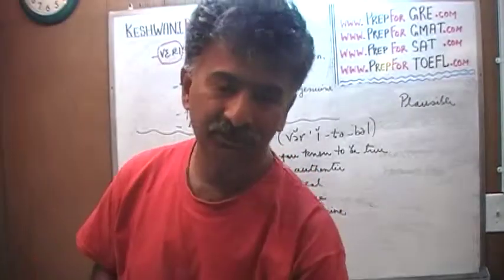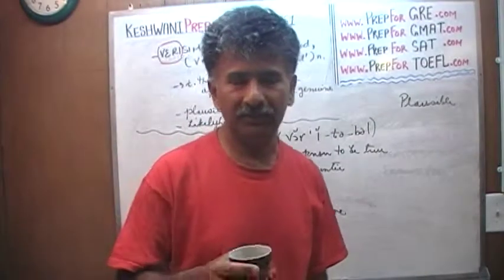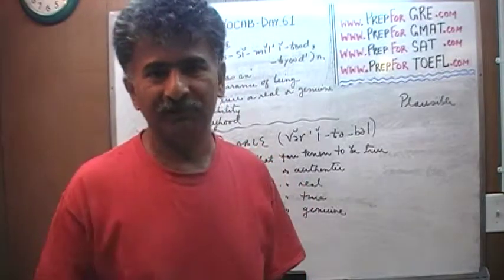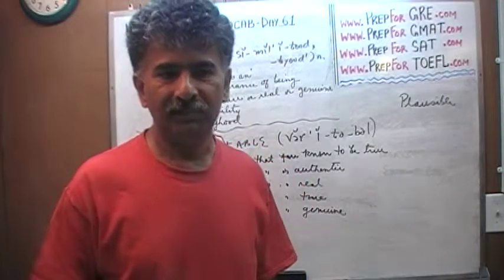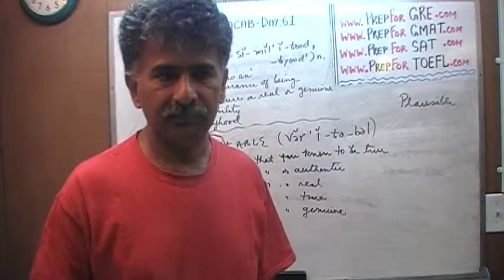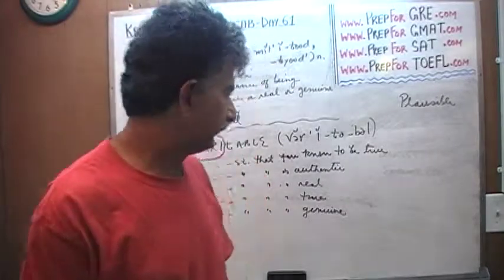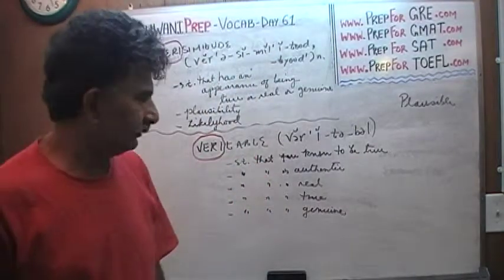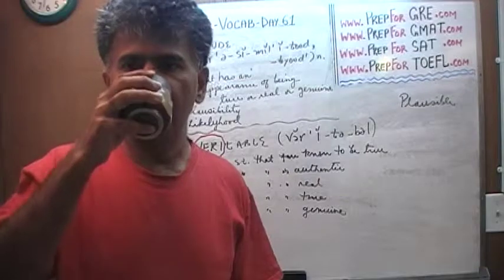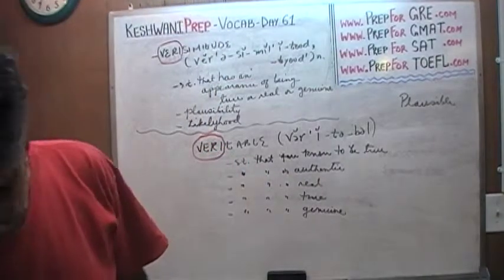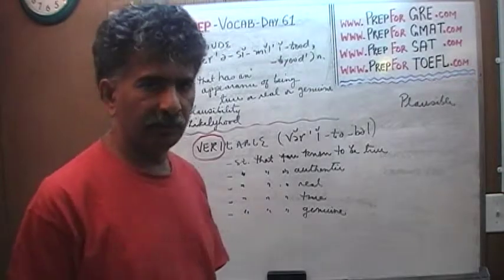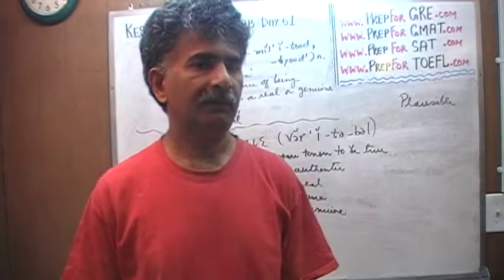For example: 'You shouldn't listen to him — everybody knows he is a veritable liar.' Veritable means unquestionably true — there is no doubt, no question about it. Whatever you are describing as veritable is an established fact.